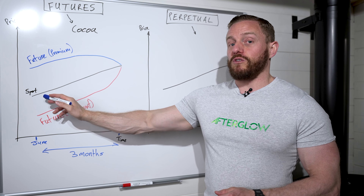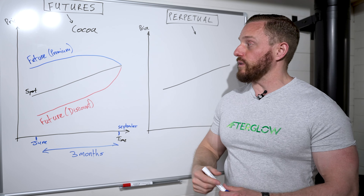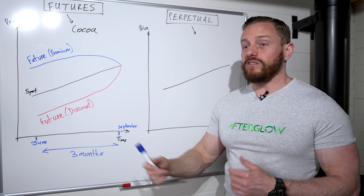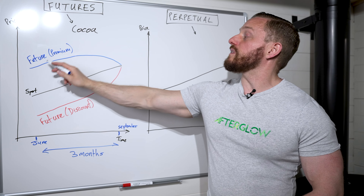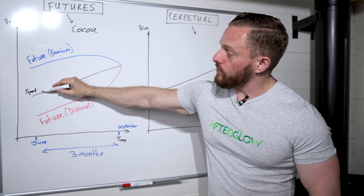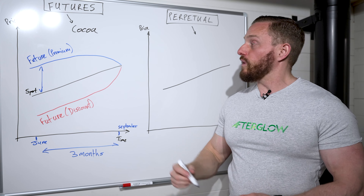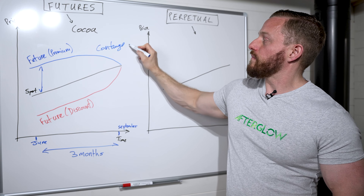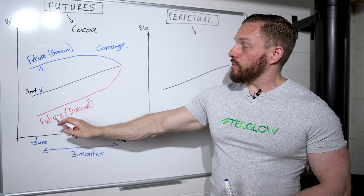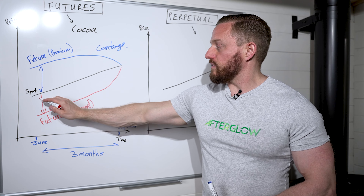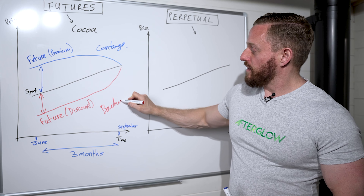Typically futures contracts are three months in length. Since we're expecting prices to rise and the futures would deliver the cocoa three months from now, the futures price would be above the spot price — we say futures are trading at a premium, or in contango. The reverse is if we're expecting prices to go down, then the futures would be below the spot price, and hence the futures contract is trading at a discount, or in backwardation.